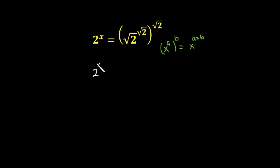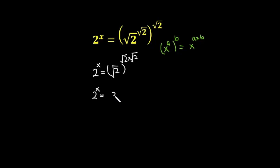So this is 2 raised to the power x is equal to 2 under root raised to the power 2 under root times 2 under root. Just multiply the powers. So in the next step, 2 raised to the power x is equal to 2 under root raised to the power 2.